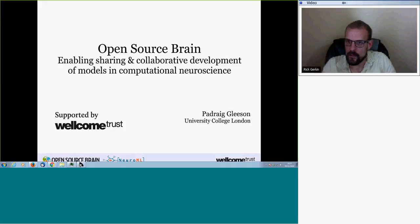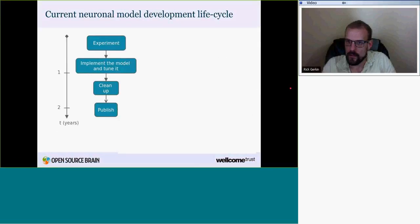Parag: Okay, can you hear me? Good. Thanks to Rick and Grace for inviting me to speak here. I'm going to speak about Open Source Brain — the platform Rick has already mentioned briefly — which is attempting to aid sharing and collaborative development of models in computational neuroscience. There are probably a lot of people here not in neuroscience, but you may recognize this general model development lifecycle: going from experiments in the lab, implementing a model in the simulator of your choice, tuning it, cleaning up the code, and actually publishing the model. This whole stage can easily take two years in neuroscience.